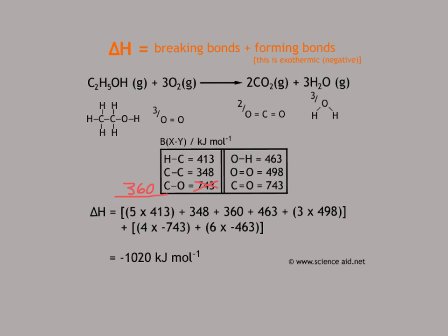Consider that each and every bond on the left is going to be broken. You can see there are five carbon-hydrogen bonds, so that is our five C-H bonds. There is one carbon-carbon in the center. There is one carbon-oxygen, which is 360 — that's the corrected value. And then there's an oxygen-hydrogen, which is 463. Those underlined in red are all on the reactant side. We also have three O2 molecules, so those are included as well. Those are all our reactants.